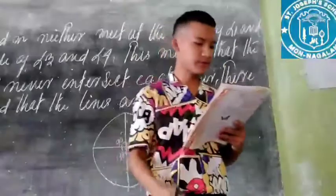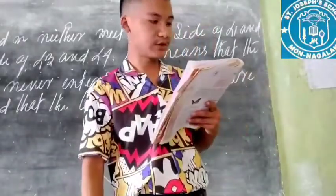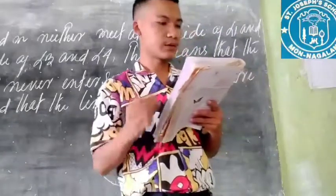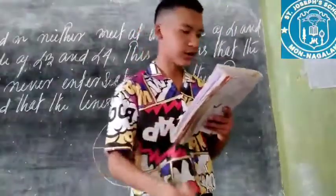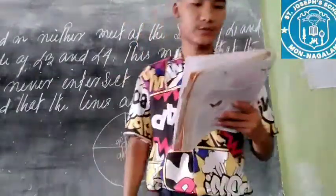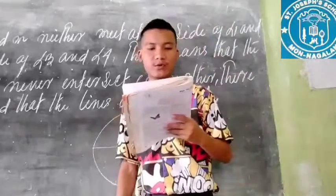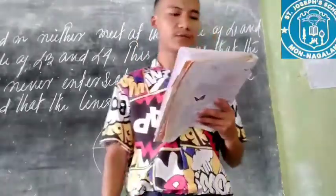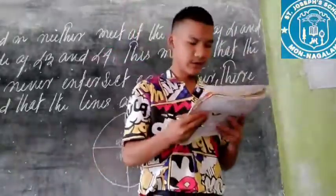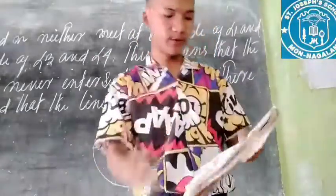The earthworm has tiny structures called setae on its body. The earthworm attaches itself to the surface using these. Now we will talk about this movement further.